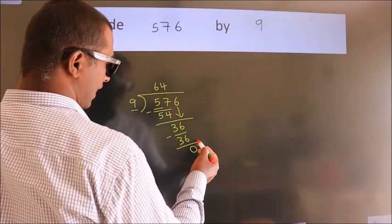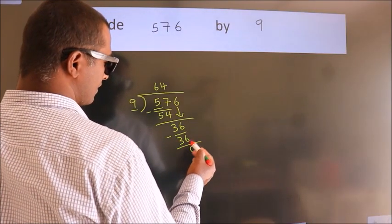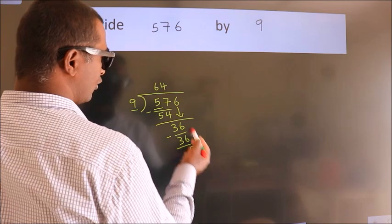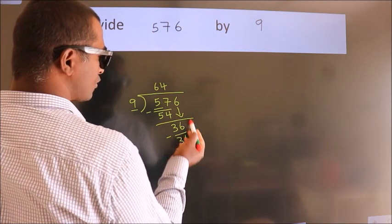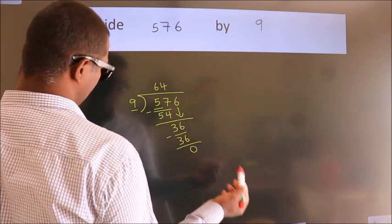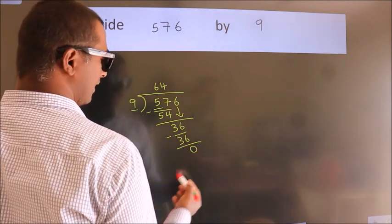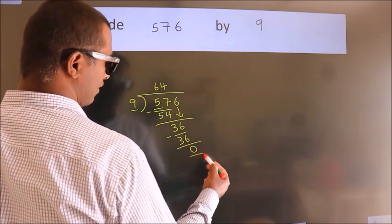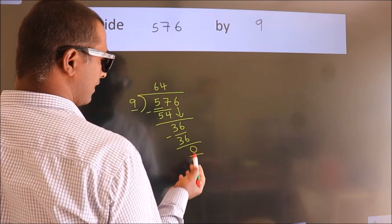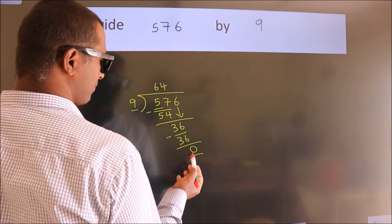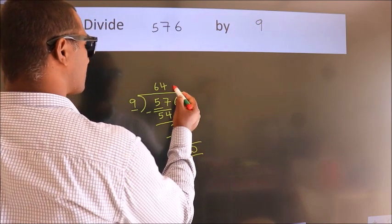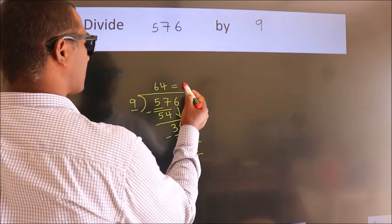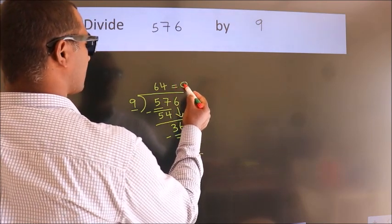After this, there are no more numbers to bring down, and we got remainder 0. So this is our quotient.